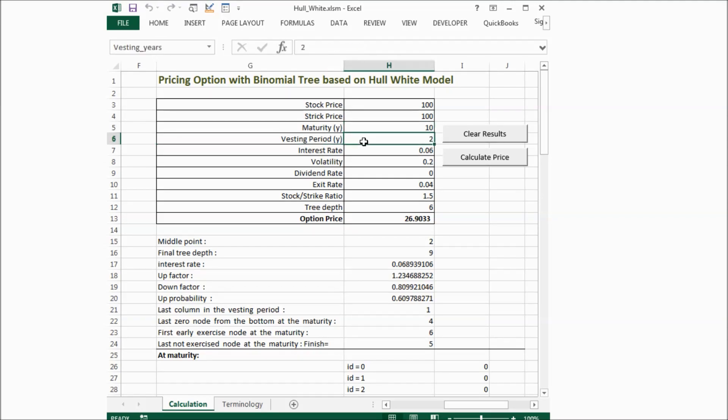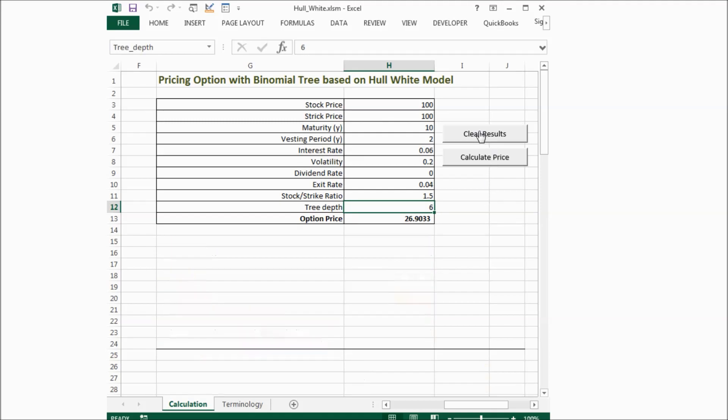Interest rate is 6%, volatility 20%, and dividend rate, we assume it's zero. And exit rate is 4%, and the multiple is 1.5. That means only if the stock price is 1.5 times of the strike price, the employee will early exercise the stock option. And then the tree depth, we initially gave it 6. And let's calculate the result.